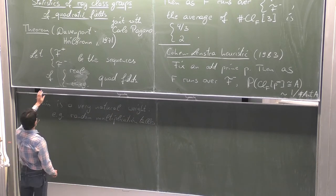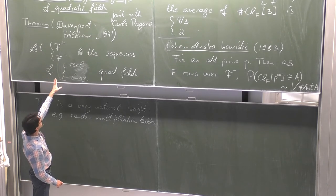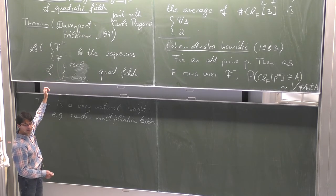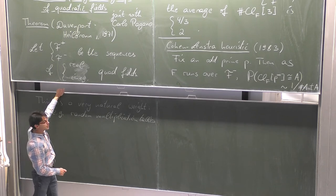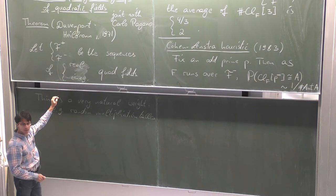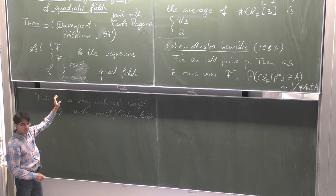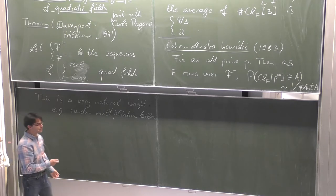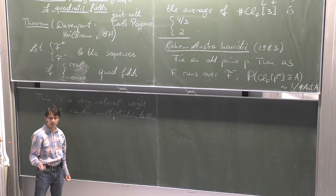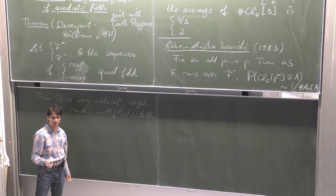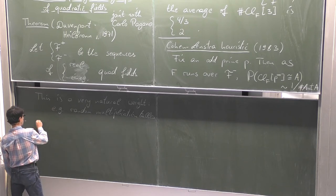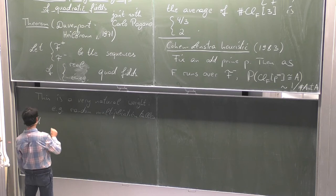But already you start getting worried, because Gauss already tells you — or at least conjectures, and then theorems by many people tell you — that real quadratic fields do not behave in the same way. So after advertising this very natural probability distribution, I immediately have to do something different in the real quadratic case. And Cohen and Lenstra do that in their paper.